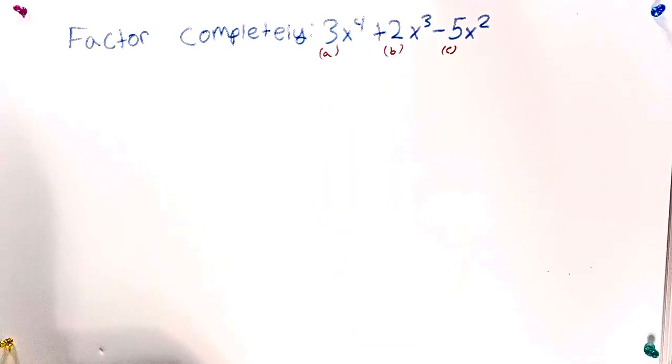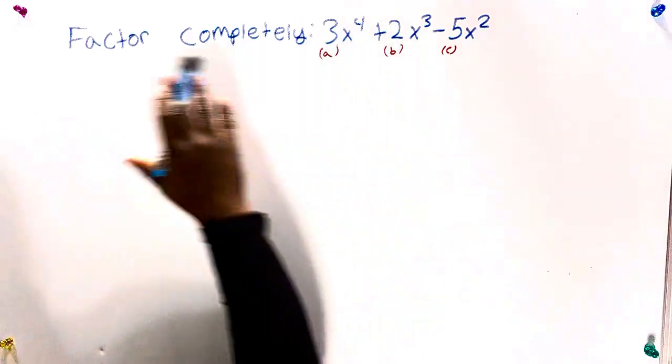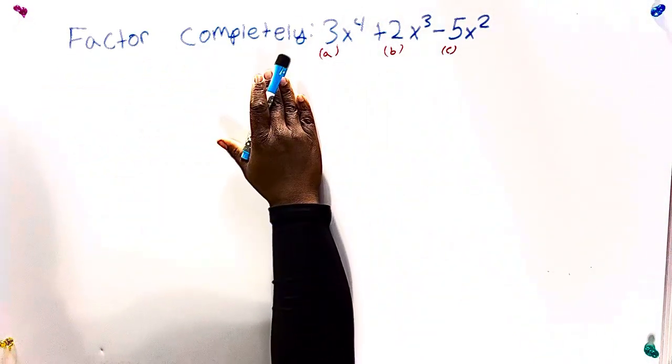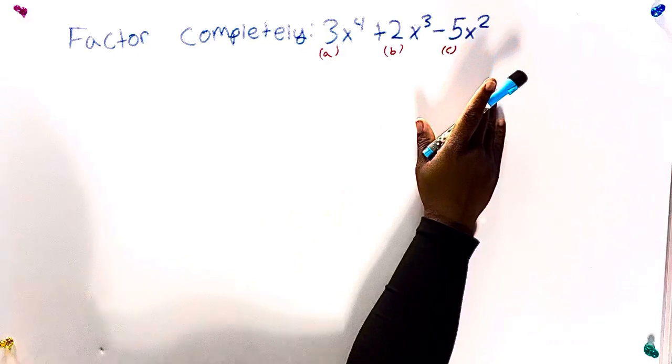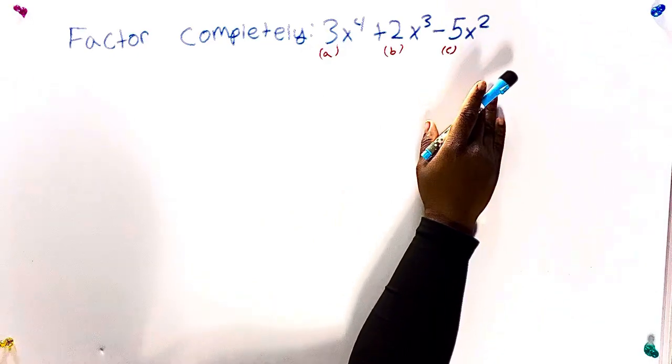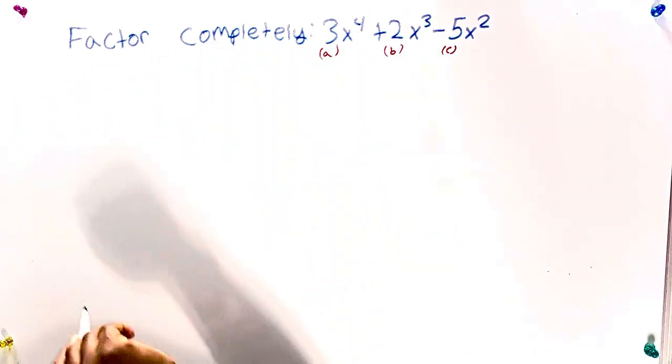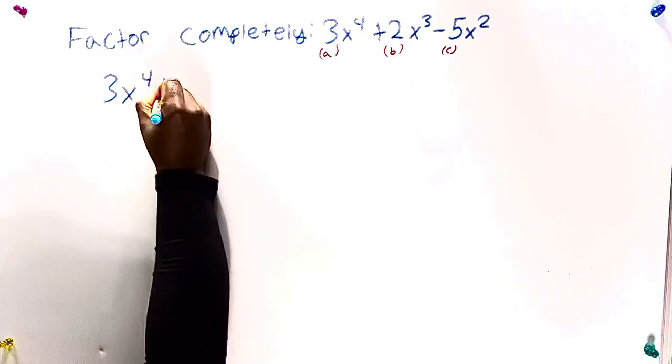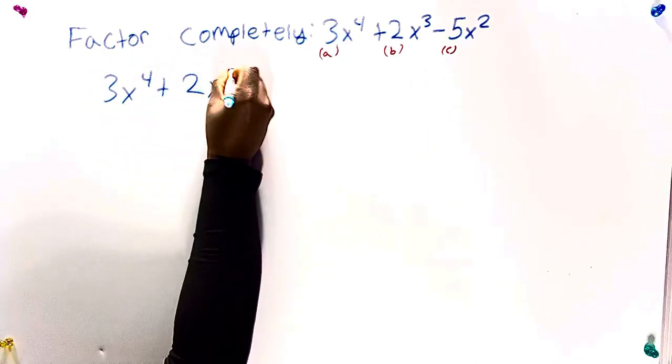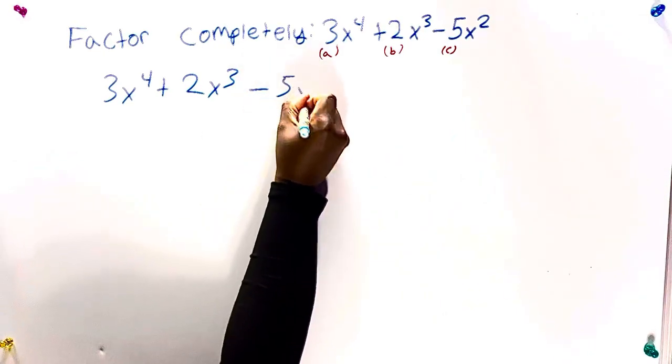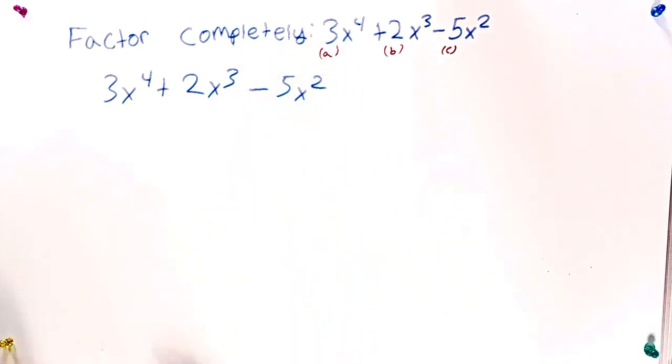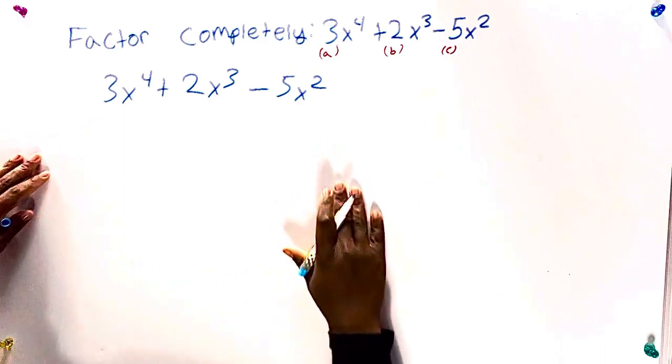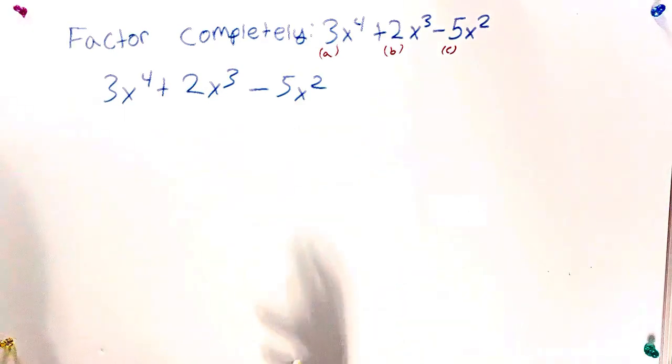Today is a beautiful day to learn some math. Let's get started. We're given this factor completely problem using a trinomial expression. The first thing for us to do, we're going to rewrite the problem. We always want to get a fresh start, right? So then now we have to notice, is there anything that is common in the problem?